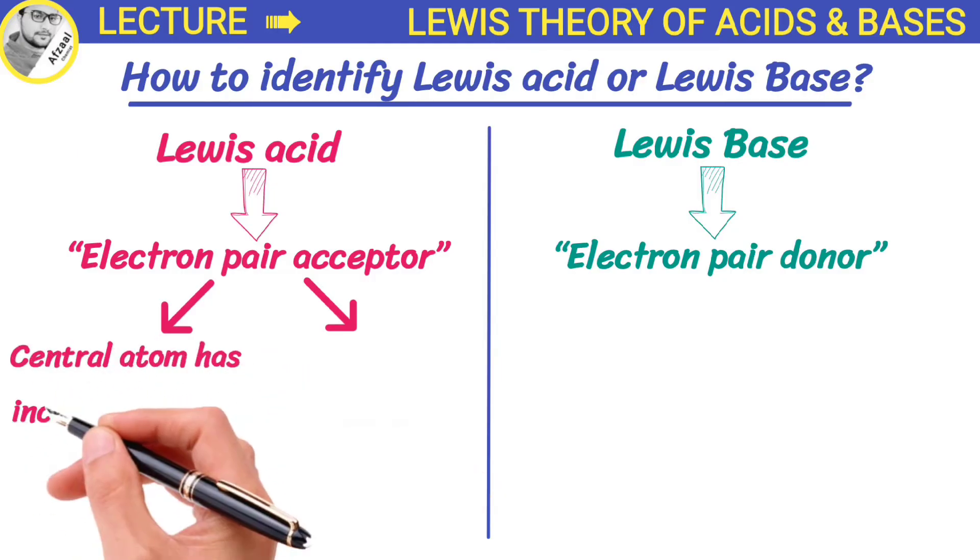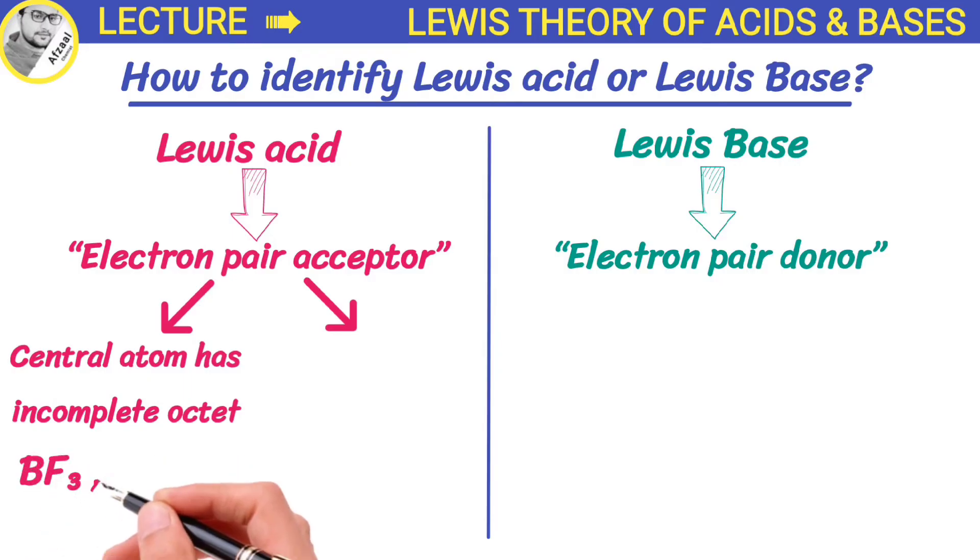Molecules in which the central atom has incomplete octet. For example, boron trifluoride and aluminum chloride. These compounds can accept an electron pair because the central atoms have only six electrons around them.